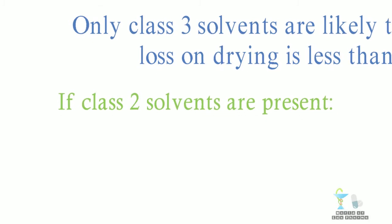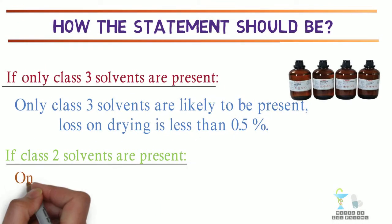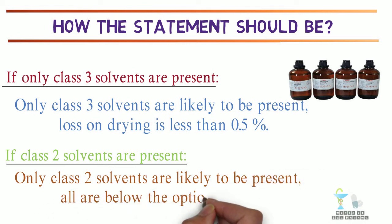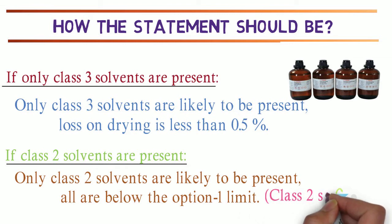If class 2 solvents are present: Only class 2 solvents are likely to be present, all are below the option 1 limit. Here, the supplier would name the class 2 solvents represented by x, y.